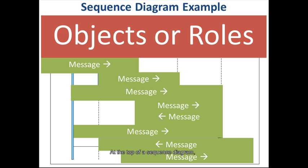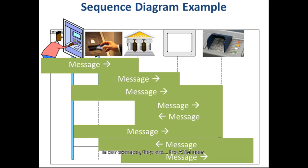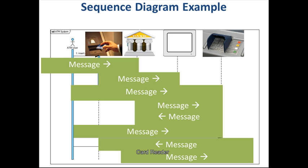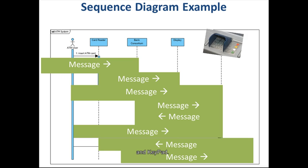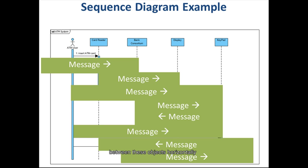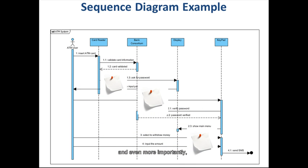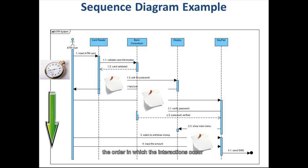At the top of a sequence diagram, you'll see the objects or roles of the system lined up in a row. In our example, there are the ATM User, Card Reader, Bank Consortium, Display, and Keypad. You'll see messages being passed between these objects horizontally, and the order in which the interactions occur as time moves from top to bottom in the diagram.